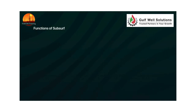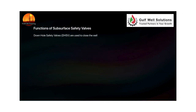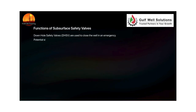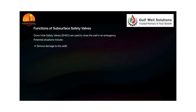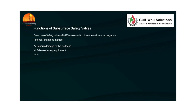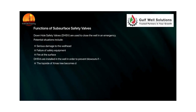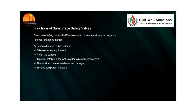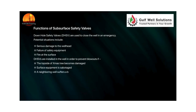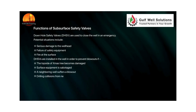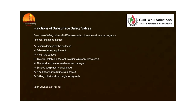Downhole safety valves (DHSV) are used to close the well in an emergency. Potential situations include serious damage to the wellhead, failure of safety equipment, and fire at the surface. DHSVs are installed in the well to prevent blowouts if the topside of the Christmas tree becomes damaged, surface equipment is sabotaged, a neighboring well suffers a blowout, or there are drilling collisions from neighboring wells. Such valves are of the fail-safe-close type: if hydraulic pressure to the valve is lost, it will immediately close.